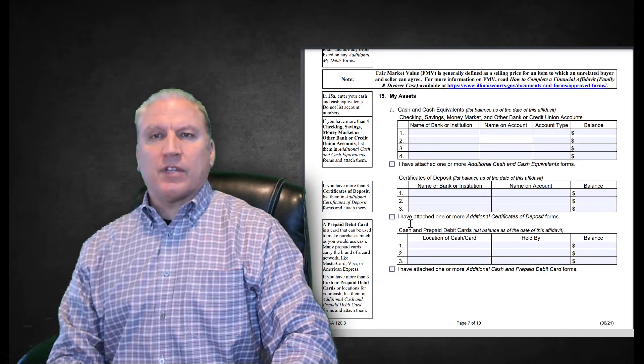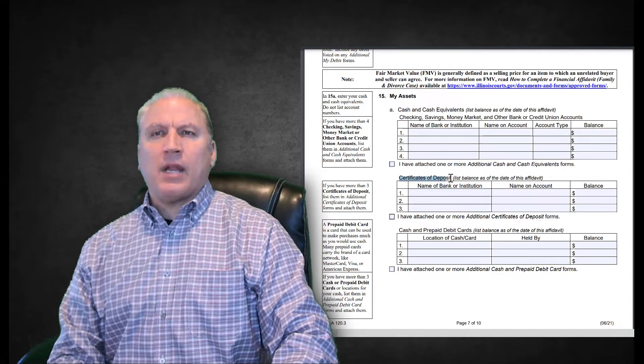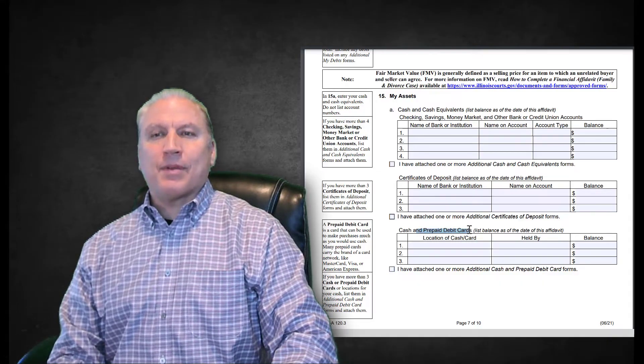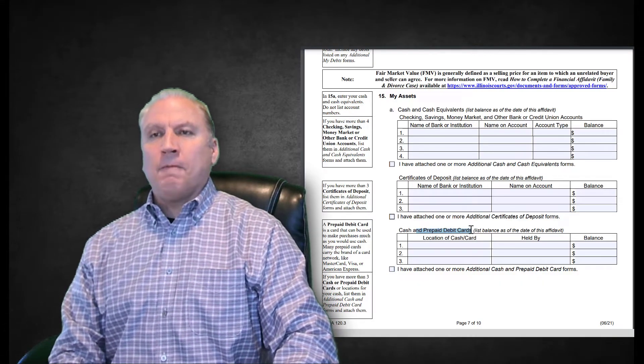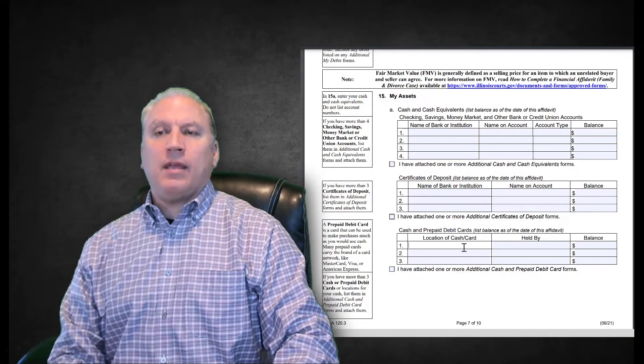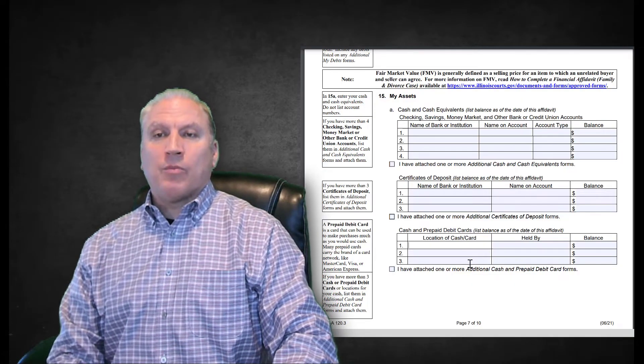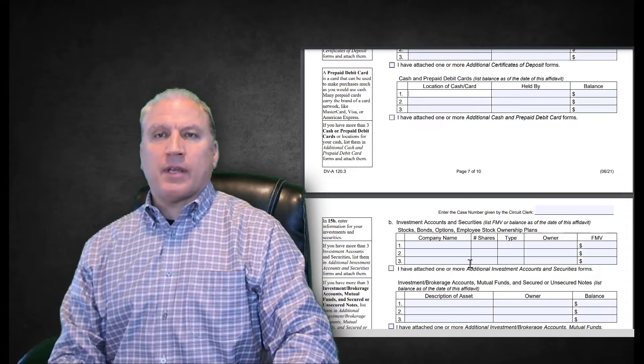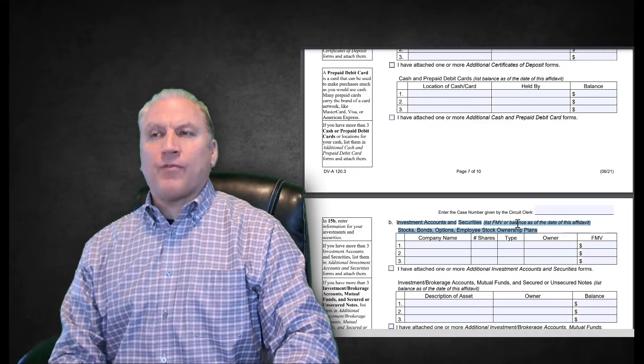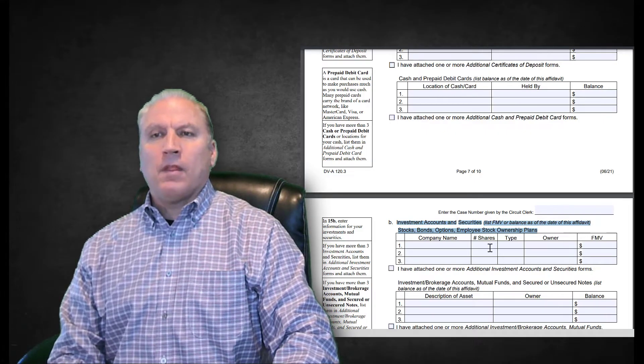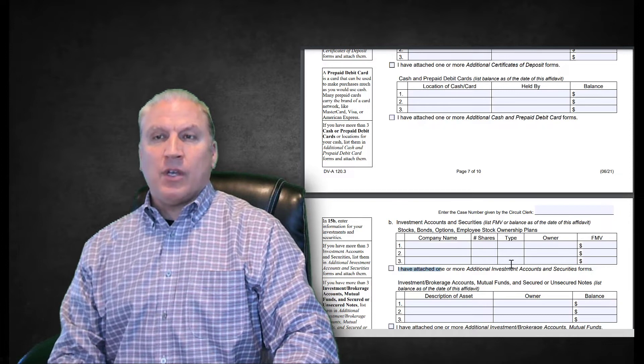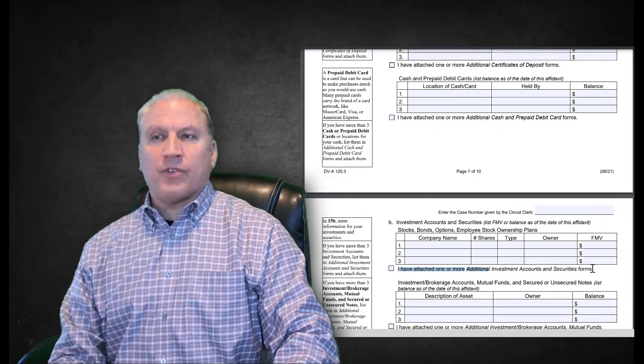Same thing with certificates of deposit—they're not as common anymore, but you want to verify that there's none of those that exist. Are there any prepaid debit cards? It's another way that people try to hide money. They purchase a debit card and prepay a balance on it, or prepay their taxes—we'll talk about that later. Investment accounts: do you have any of these? Is it an IRA, 401(k), IRA account? It only has place for three, but it says 'I have attached additional forms if they have more than three.'